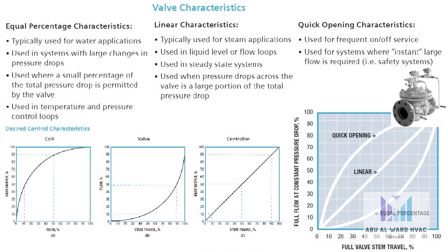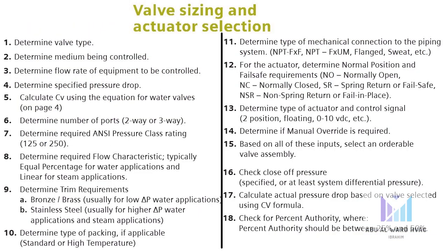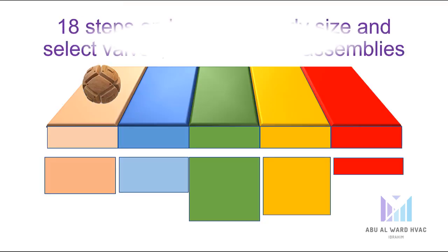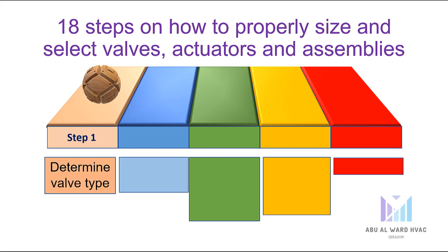There are a couple of engineering design questions that need to be answered in order to help maintain the design intent of the system. In this section we will provide 18 steps on how to properly size and select valves, actuators, and assemblies. Now let's go through all 18 steps on how to properly size and select valves, actuators, and assemblies.